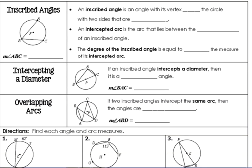Inscribed angles. Notice the difference between inscribed and central. We defined this yesterday, but let's review it. An inscribed angle is an angle with its vertex on the circle. The vertex is on the circle with two sides that are chords. An intercepted arc is the arc that lies between the chords of an inscribed angle.